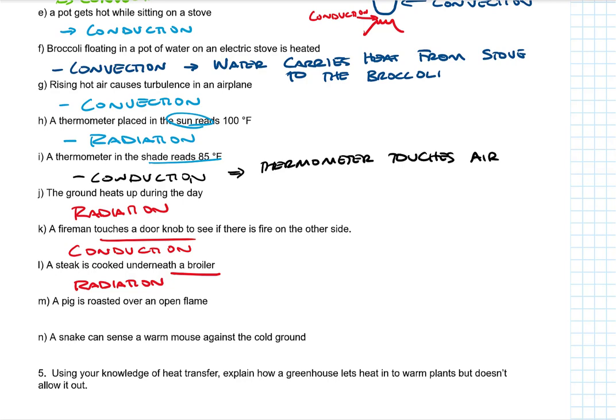Pig is roasted over an open flame. We've got all three. But what we could really say is radiation plus complicated convection, where you have the hot fire warming the air, air circulating warming the pig. But it's radiation and then convection. A snake can sense a warm mouse against the cold ground. I'm going to say that's conduction.